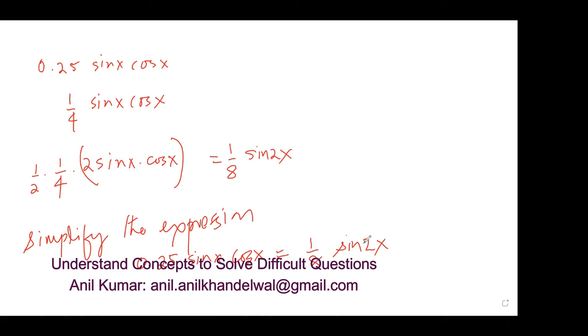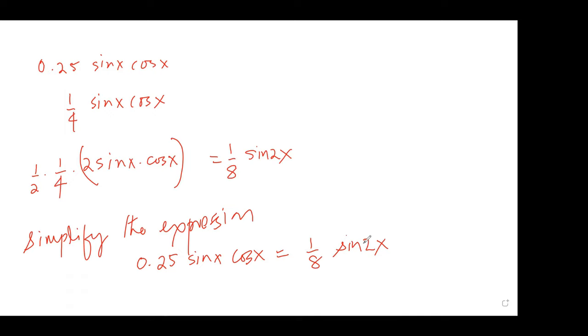So we can now write that 0.25 sin x cos x equals 1 over 8 sin 2x. Did you get the same thing in the exam? No. Okay, it doesn't matter. That is what it meant really. Any other question?